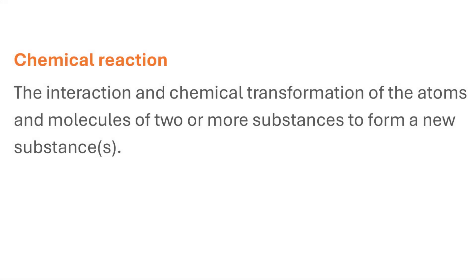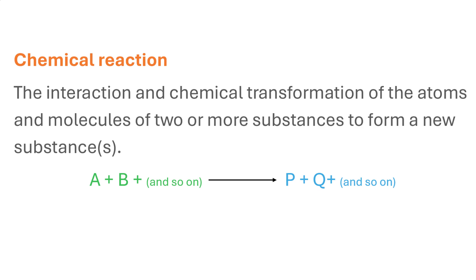A chemical reaction can be defined simply as the interaction and chemical transformation of the atoms and molecules of usually two or more substances to form a new substance or substances. The substances that take part in a chemical reaction are known as the reactants, while the new substances formed after a chemical reaction has occurred are known as the products.